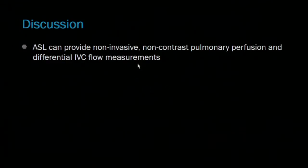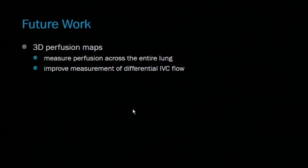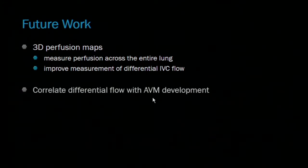We've demonstrated a non-invasive, non-contrast measurement of both pulmonary perfusion and differential IVC flow measurements using arterial spin labeling. This technique, which poses no additional risk to pediatric patients, has the potential to provide a longitudinal Fontan evaluation to assess risk for AVM development. Future work will include creating 3D perfusion maps to more accurately assess perfusion across the entire lung, which should also improve measurement of differential IVC flow, and we'd like to correlate those differential flow measurements with AVM development in future patients.